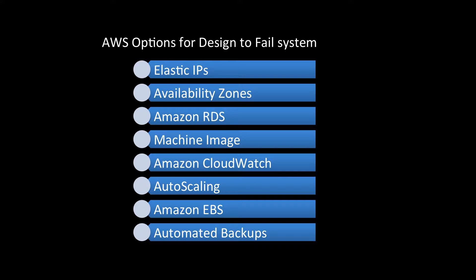Amazon RDS provides deployment functionality to automatically replicate database updates across multiple availability zones, so the backup database is always ready. We also have Amazon Machine Image (AMI), which allows us to maintain an AMI to easily restore and clone environments in a different availability zone. As soon as the system is down in one environment, we can start it up in the next.